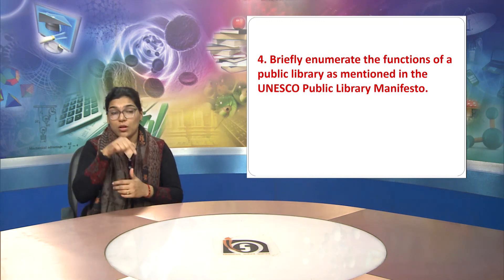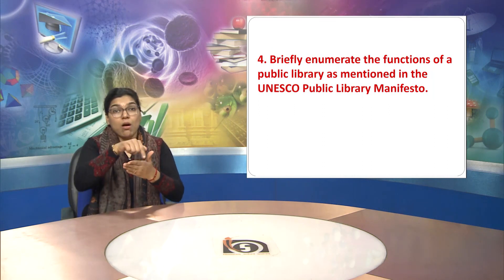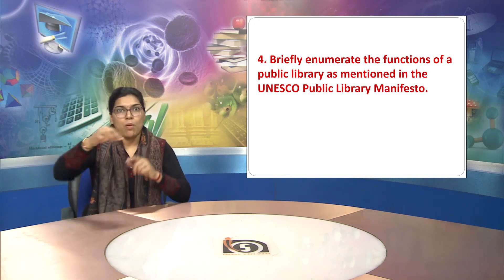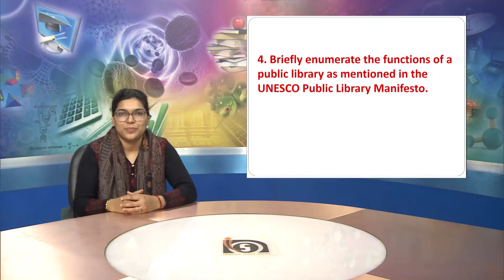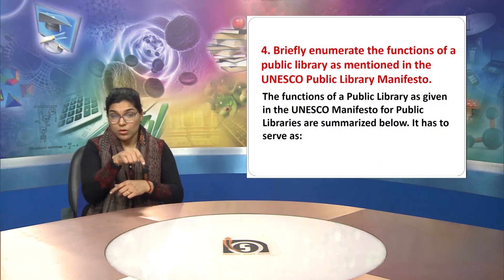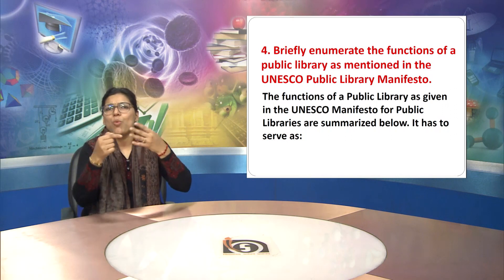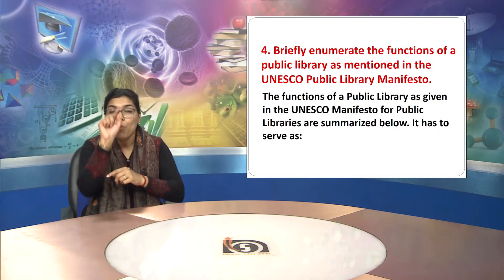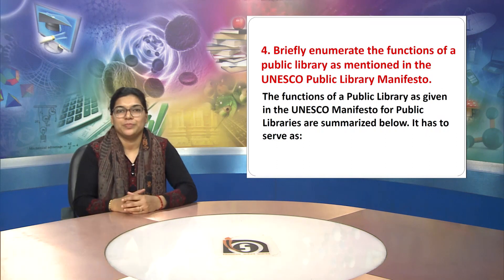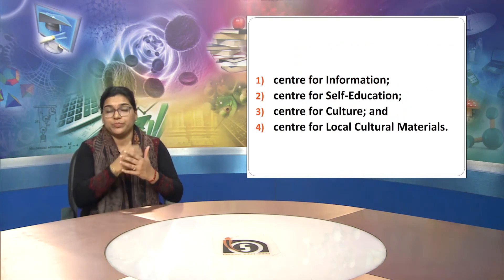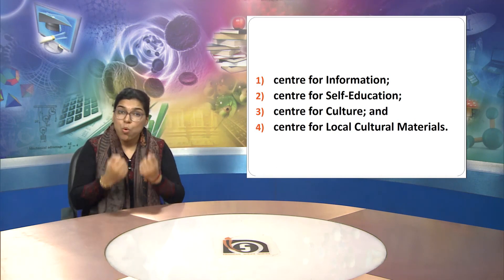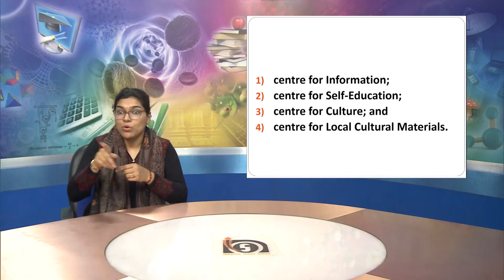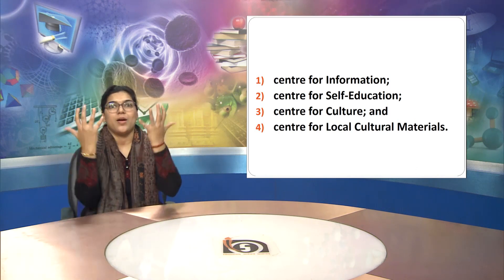Question four: Briefly enumerate the functions of a public library as mentioned in the UNESCO Public Library Manifesto. The functions of a public library as given in the UNESCO manifesto are summarized below. It has to serve as the following four points which are shown on screen. The first point is center for information.